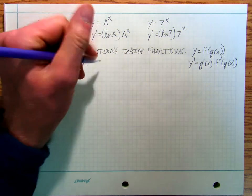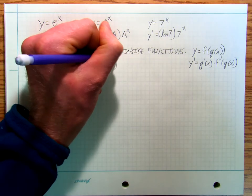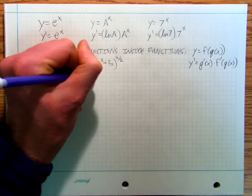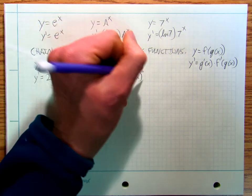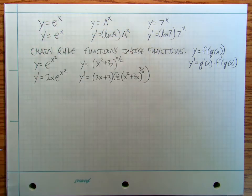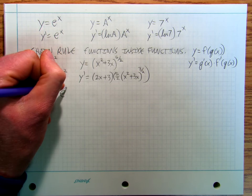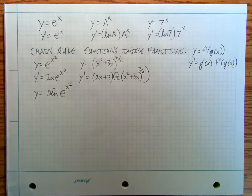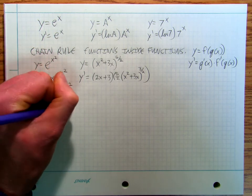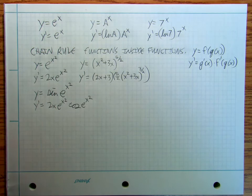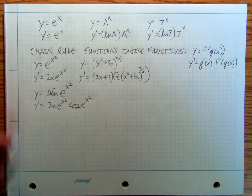y equals x squared plus three x to the five halves, y prime is equal to two x plus three times five halves times x squared plus three x to the three halves. And y equals sine of e to the x squared, y prime is equal to two x times e to the x squared times cosine of e to the x squared. Derivative of the inside times the derivative of the middle times the derivative of the outside — that's a double chain rule.